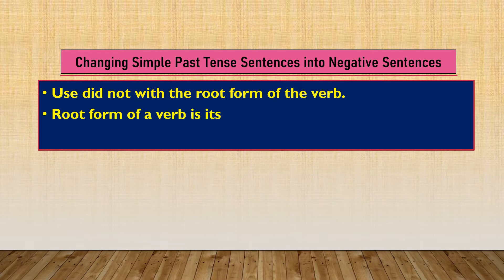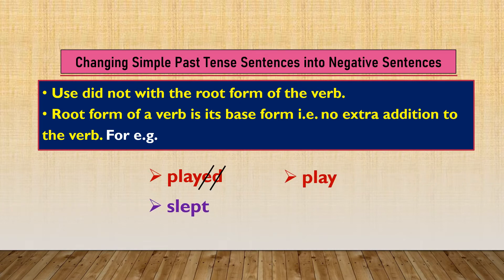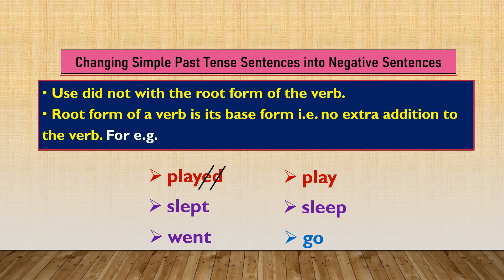Root form of a verb is its base form — that is, no extra addition to the verb. For example, 'played' will become 'play,' 'slept' will become 'sleep,' 'went' will become 'go.' Similarly, whatever verb is given, we just have to bring it back to its root form, that is the first form of the verb. And just add 'did not' before the verb, and your sentence will get converted into a negative sentence.